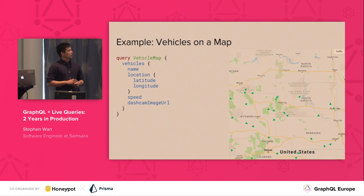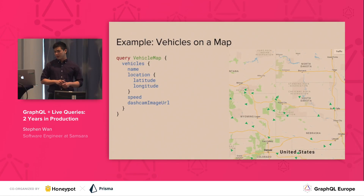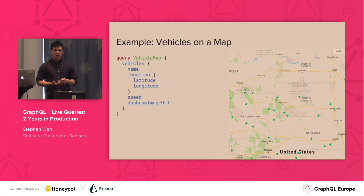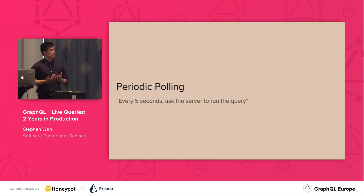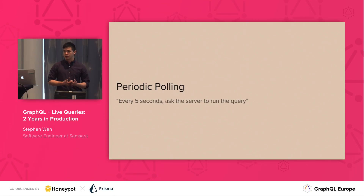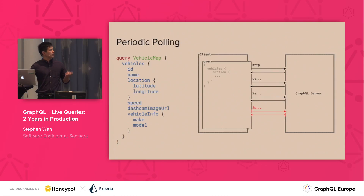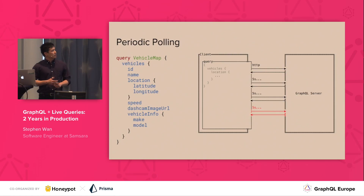Let's look at a basic feature we might find in our system — showing vehicles on a map. We might run a simple query fetching all our vehicles, grabbing their location, their speed, and the latest image. One approach is to just periodically poll the server for the current state — every five seconds, we send a query to the server and get the latest state.